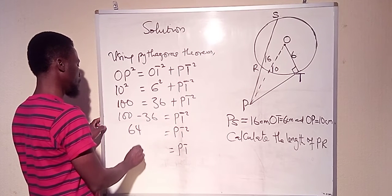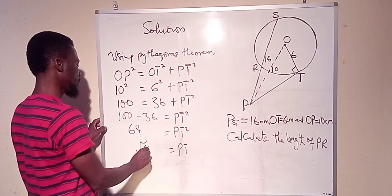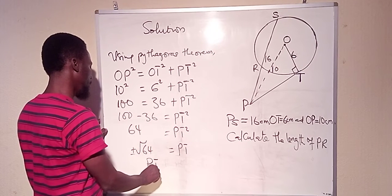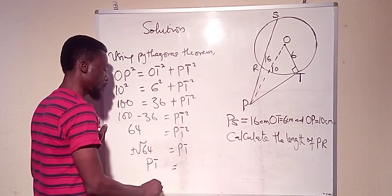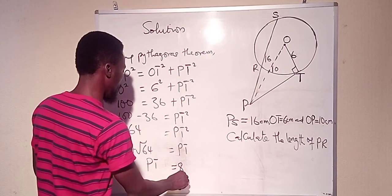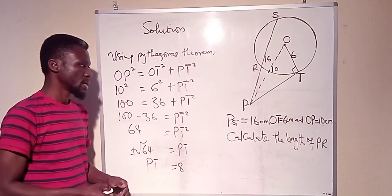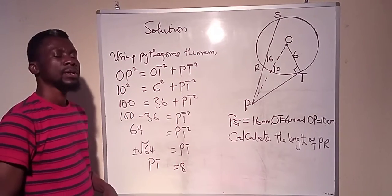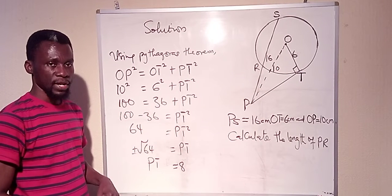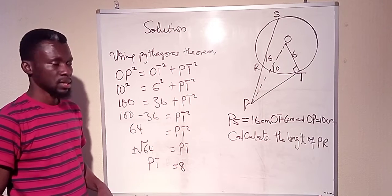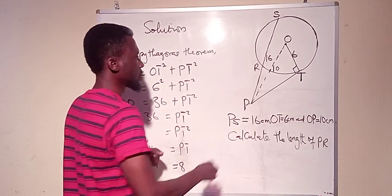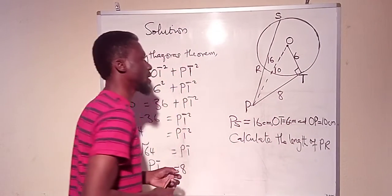So PT is equal to the square root of 64, which is plus or minus 8. Since we cannot have a negative length, PT is equal to 8 centimeters. Now knowing that PT equals 8, let's apply the tangent-secant theorem to find PR.